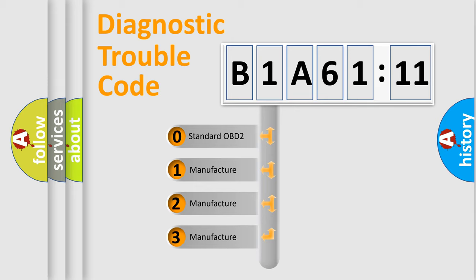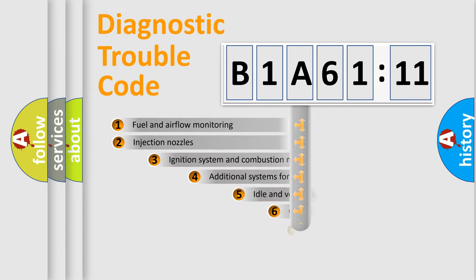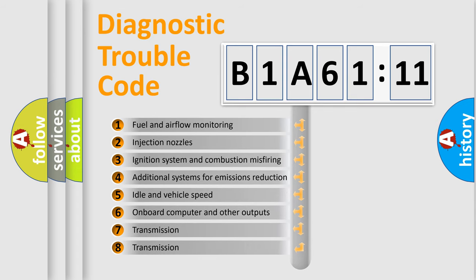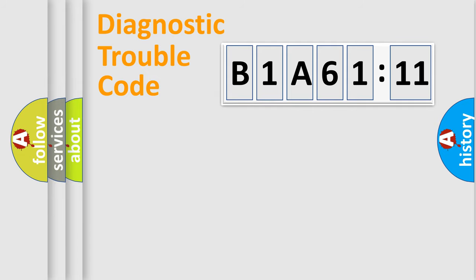If the second character is expressed as zero, it is a standardized error. In the case of numbers 1, 2, or 3, it is a manufacturer-specific expression of the car-specific error. The third character specifies a subset of errors. The distribution shown is valid only for the standardized DTC code. Only the last two characters define the specific fault of the group.